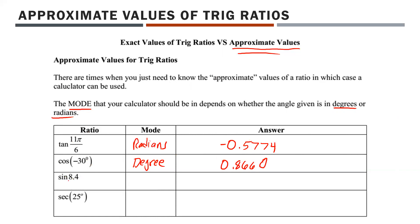For example: sine 8.4 — notice there's no degree sign, so this is technically in radians. Switch to radian mode and enter sine 8.4. That gives approximately 0.8546 to four decimal places. For tan(11π/6) in radian mode, the result is approximately negative 0.5774.